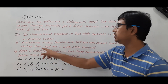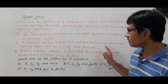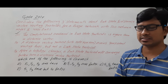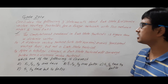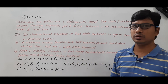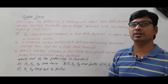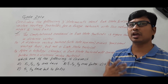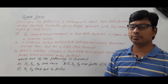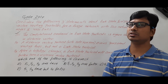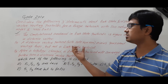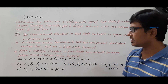Now statement S2: a distance vector with split horizon avoids routing loops, but not a link state protocol. They are saying that in link state protocol we have routing loops — but no, in link state we will never have routing loops because it does not have a count to infinity problem. In distance vector we do have a count to infinity problem, but with split horizon we do not encounter it. So the first part of S2 is correct, but saying link state has routing loops is wrong. Therefore, statement S2 is false overall.